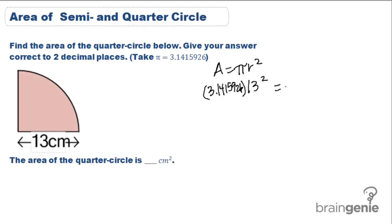When we multiply that out, we are going to get 531.66 centimeters squared. Now remember, that's the entire circle. To find the quarter part of it, we do 531.66 and divide that by 4, because a quarter is one fourth of the entire circle.